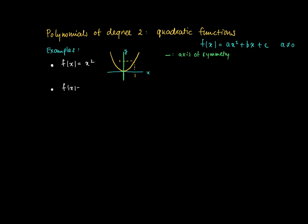The second example: f(x) = -x². What we do compared to the former example is put a minus sign for any y value we achieve. So now we get a parabola opening downward, with an axis of symmetry again at x = 0. This is due to the fact that the constant a equals -1, which is smaller than zero.